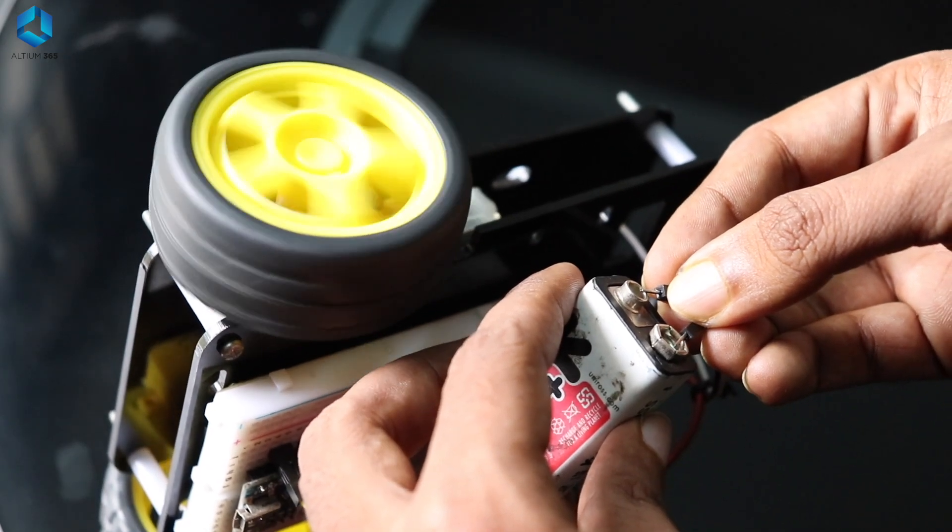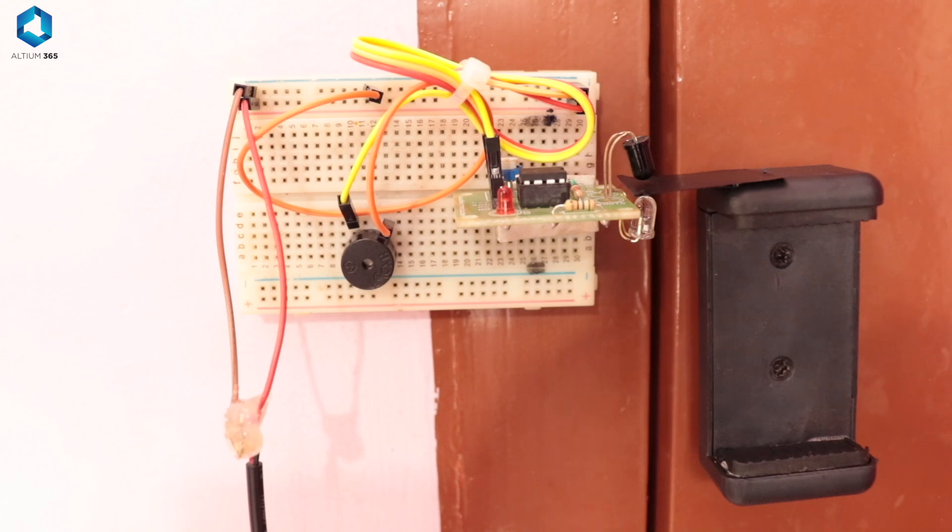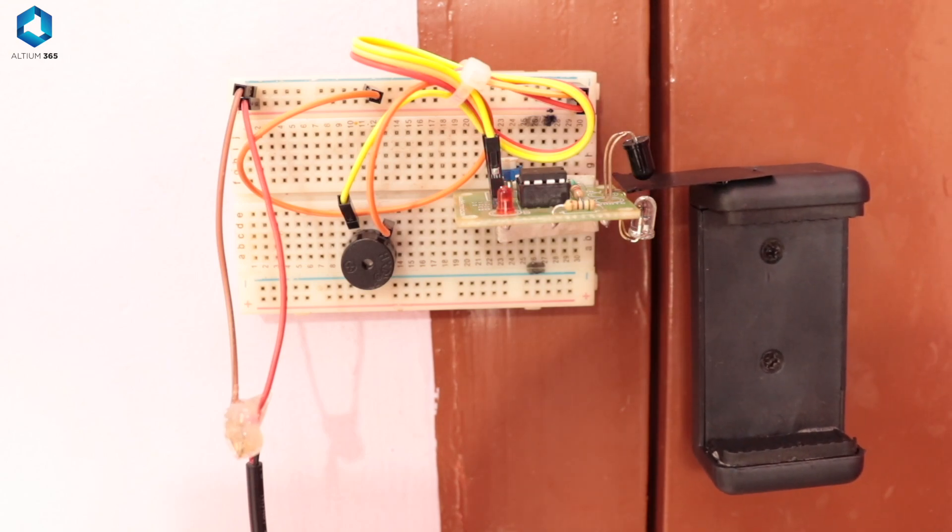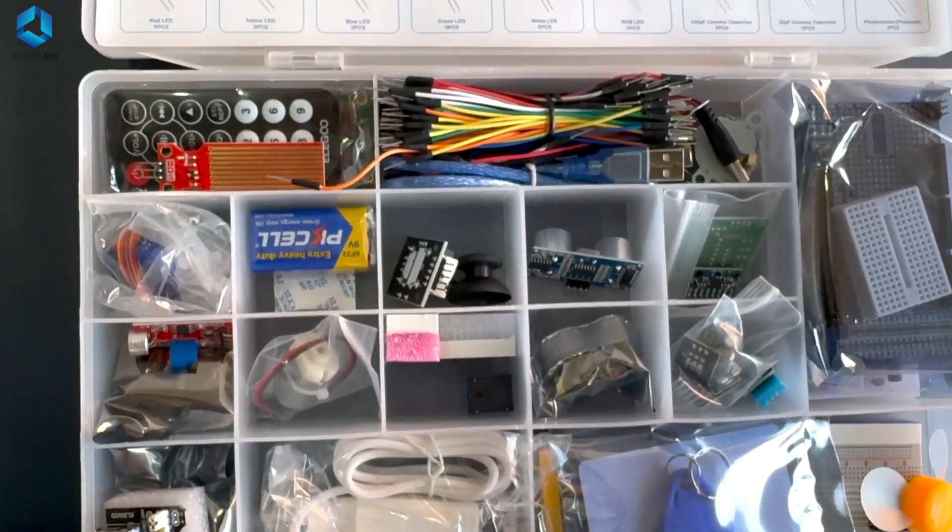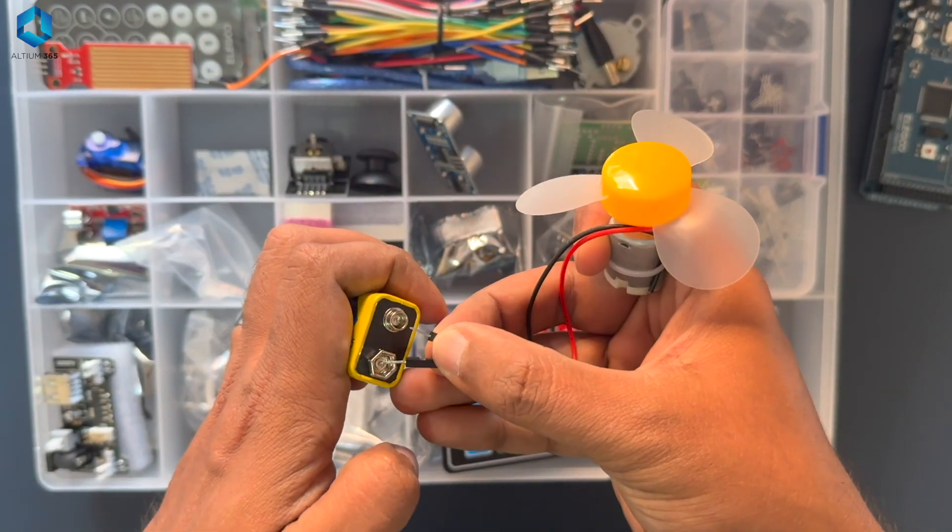For example, circuit that allowed me to control the speed of DC motor or circuits that allowed me to turn on the LED when the ambient light is low and turn off the LED when the ambient light is high. At this point I also discovered so many electronic kits that can be bought online or offline with all the necessary components as well as project guides.